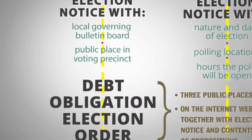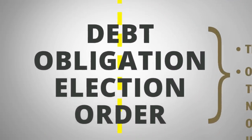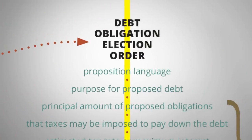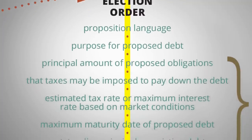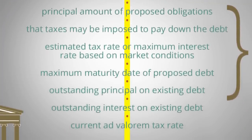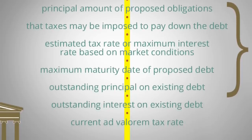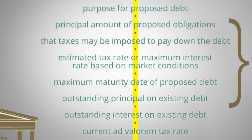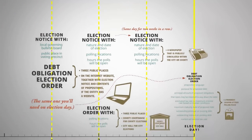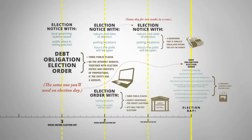Starting at least three weeks before the election, a debt obligation order must be posted in three public places as well as on the internet alongside the election notice and contents of propositions, but only if the entity has a website. The debt obligation order must include the principal amount of the entity's proposed obligations, the estimated tax rate or maximum estimated interest rate on the proposed debt if passed, and the outstanding principal and interest on existing debt obligations. This basically tells you how much your local government entity currently owes and what the newly proposed debt will cost if approved.